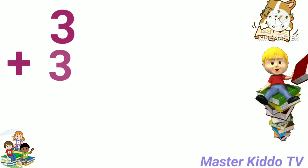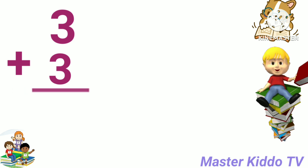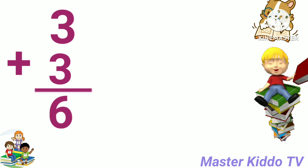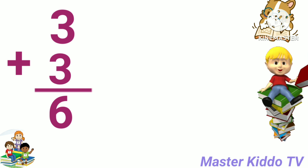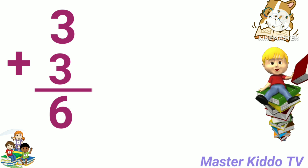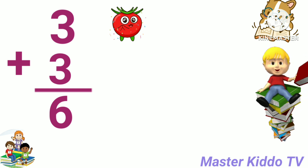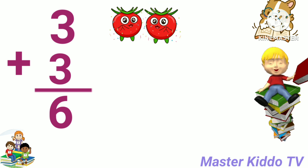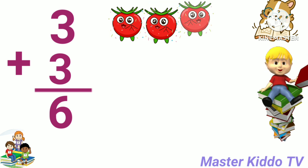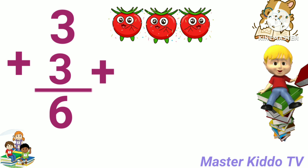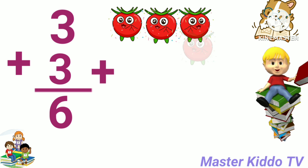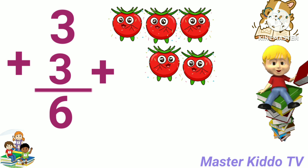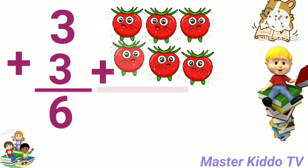3 plus 3, 3 plus 3 is equal 6. 3 plus 3, answer will be 6. Now we add pictures: 3 tomatoes plus 3 tomatoes.